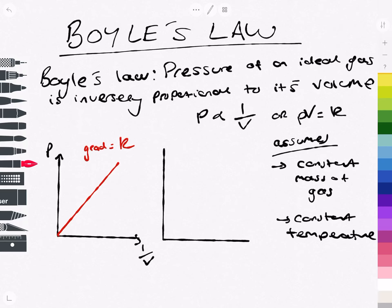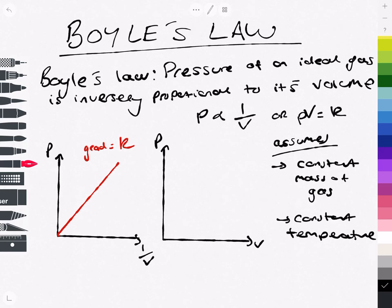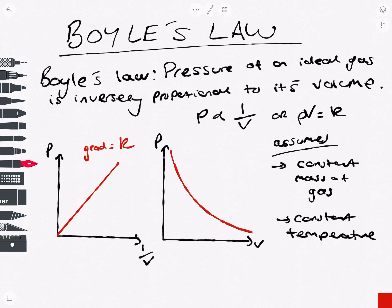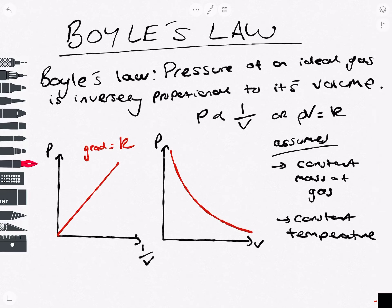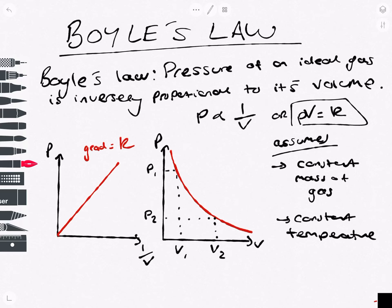The second graph is slightly more interesting, which is if we were to plot pressure directly against volume. What we end up with here is a curve. We realise that at any point on this graph, if I were to take a pressure P1 and a pressure P2, and their corresponding volumes V1 and V2, they should multiply together to give the same thing, because PV equals K — it's a constant. As we've got a high pressure, we've got a low volume; we've got a low pressure, we've got a high volume.